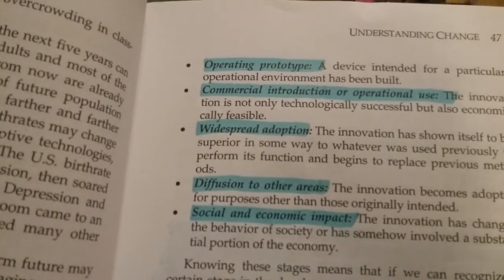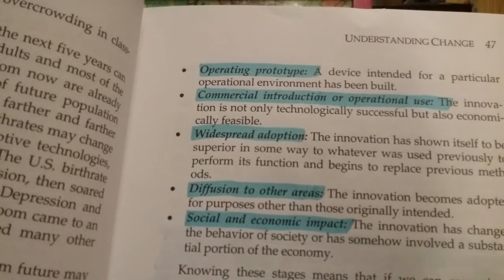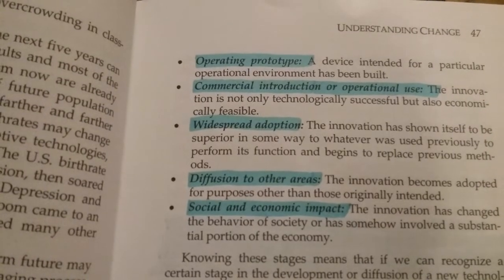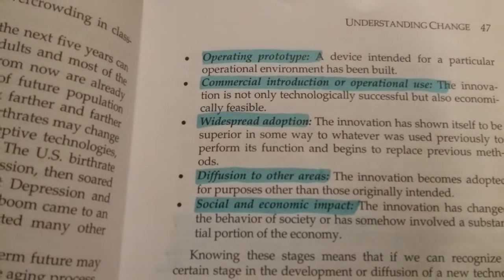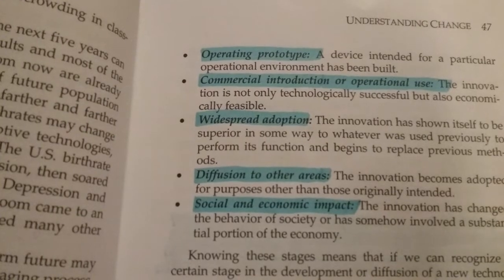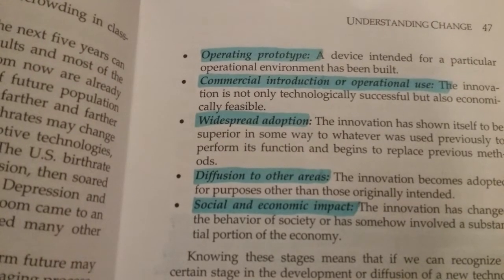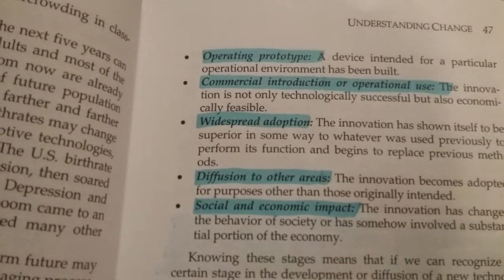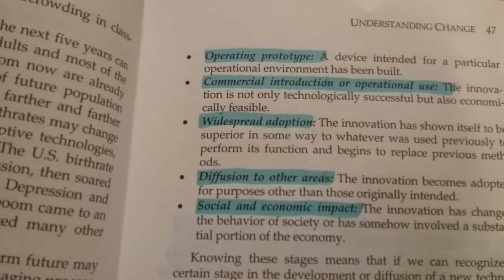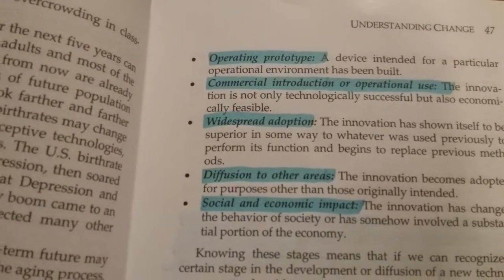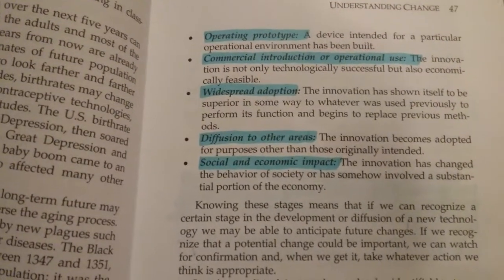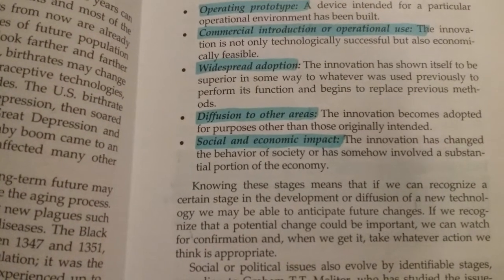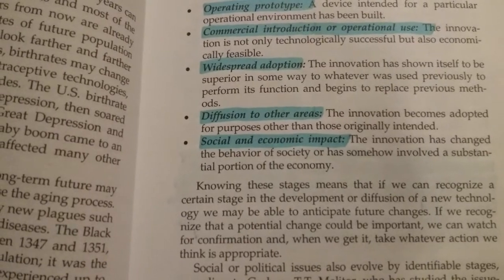Operating prototype — a device intended for a particular operational environment has been built. Commercial introduction or operational use — the innovation is not only technologically successful but also economically feasible. Widespread adoption — the innovation has shown itself to be superior in some way to whatever was used previously to perform its function, and it begins to replace previous methods. Diffusion to other areas — the innovation becomes adopted for purposes other than originally intended. Social and economic impact — the innovation has changed the behavior of society or has somehow involved a substantial portion of the economy.